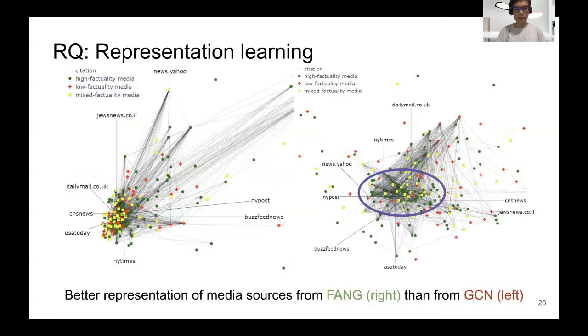We also examine the media representations produced by both FANG and GCN. And we can see that FANG produced better representations. For the media that has high factuality, you can see that they have their representations in the middle of the representation landscape, and they also have very high inter-citation density. Whereas in GCN, the representations of both high and low factuality media are less differentiable.